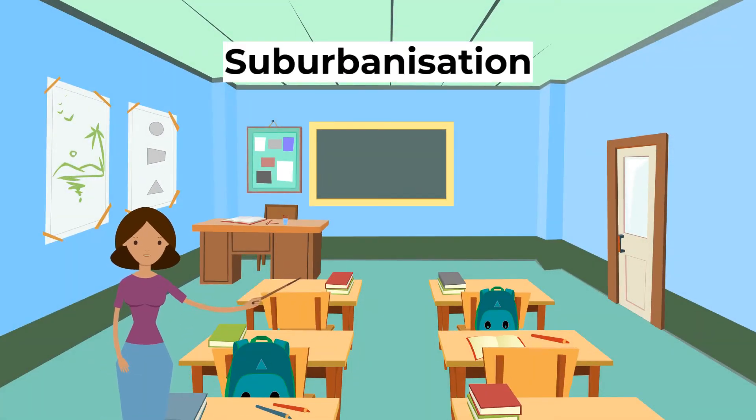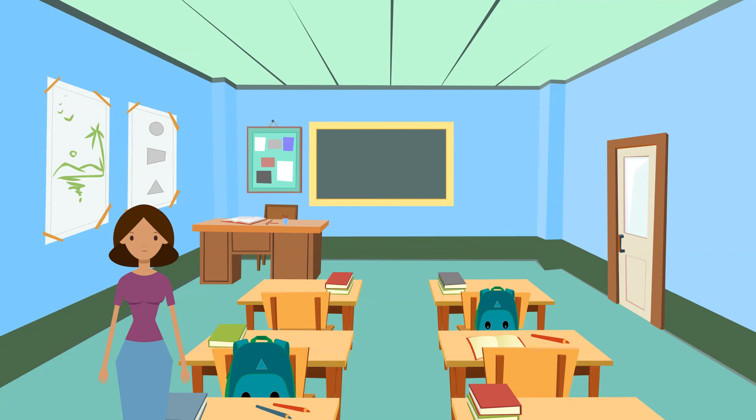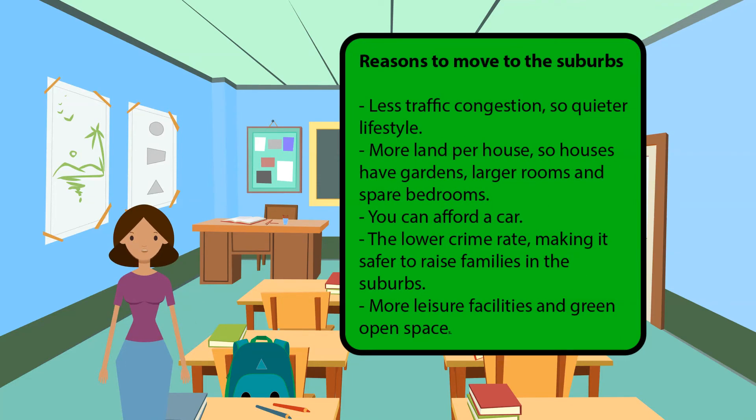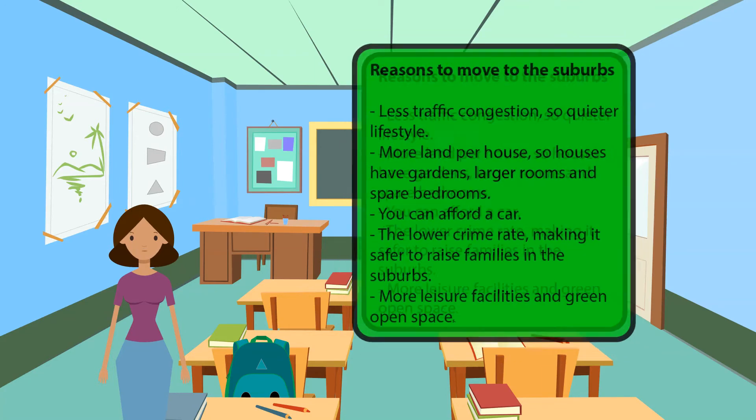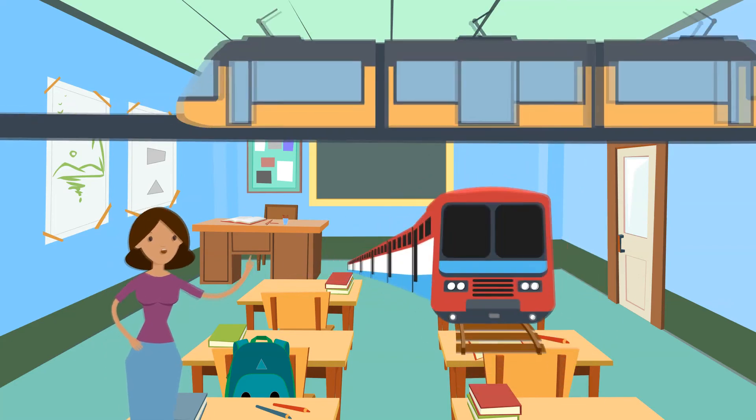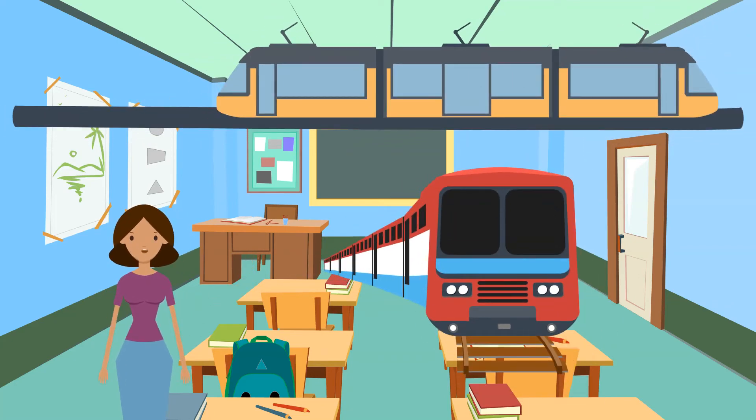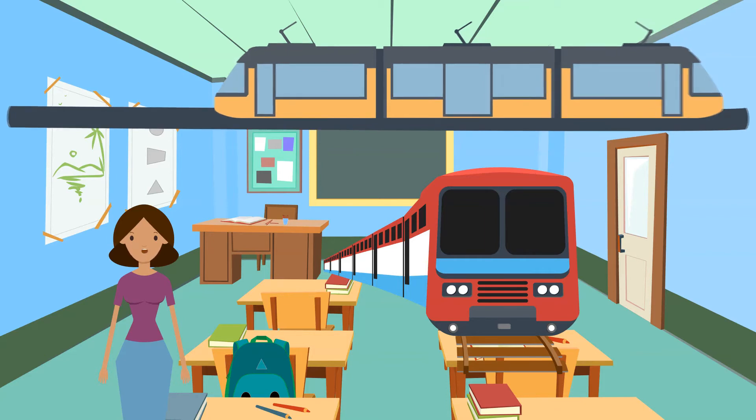The next topic we need to look at is suburbanization. As the city builds, some residents would prefer a quieter quality of life. For example, individuals may want to move away from the city center and towards the suburbs of the city. So what were the reasons to move to the suburbs? Less traffic congestion, so quieter lifestyle. More land per house, so houses have gardens, larger rooms, and spare bedrooms. You can afford a car, lower crime rate making it safer to raise families in the suburbs, more leisure facilities and green open spaces. Governments can encourage suburbanization by building new transport links to the periphery of the city as well as allowing new housing developments on greenfield lands surrounding the city.